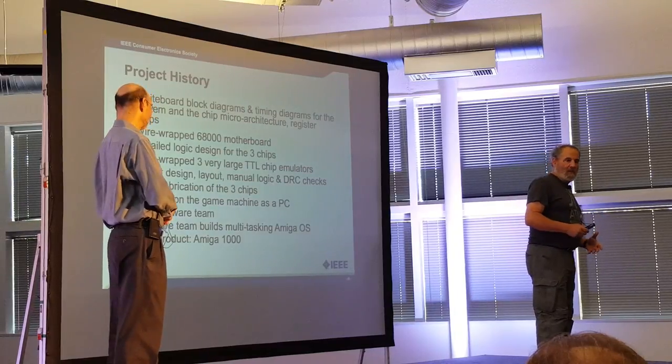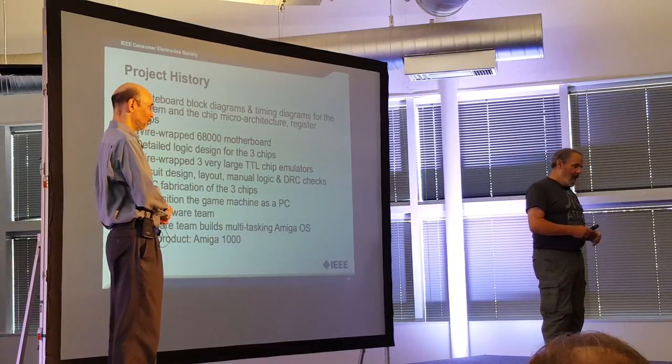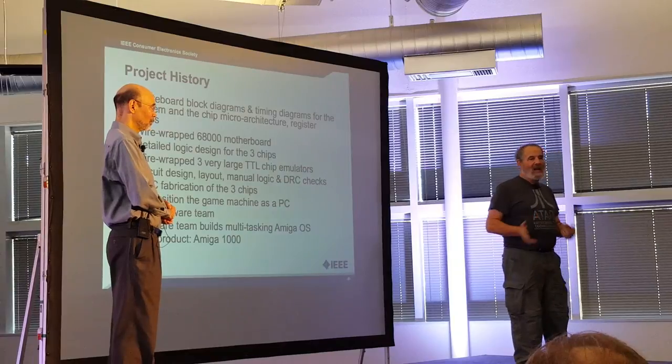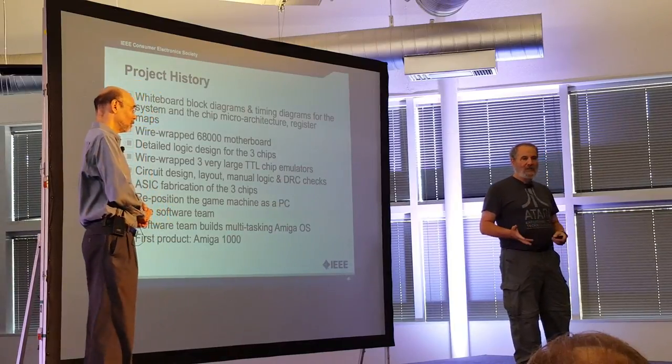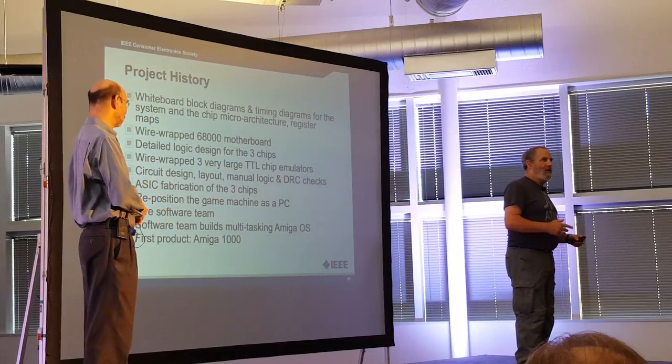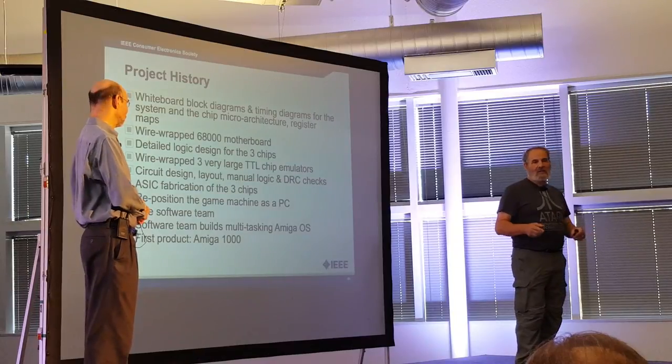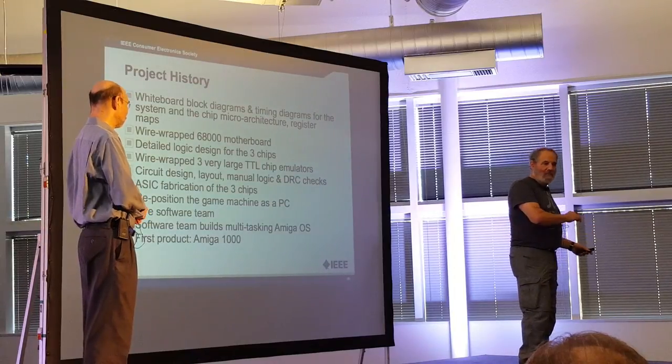In 1984, the Amiga company itself was running out of money. They built the chipset. They had convinced Atari to consider licensing the chipset to win coin-op games with.